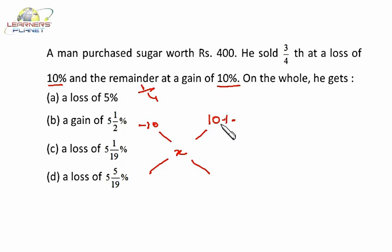It is three-fourths and it is one-fourth. Definitely 10 will be greater than X. So it is 10 minus X and it is X minus minus 10, that means it is X plus 10.